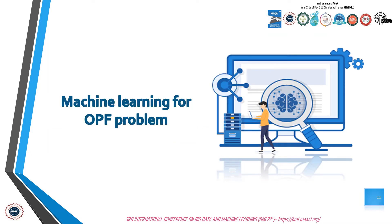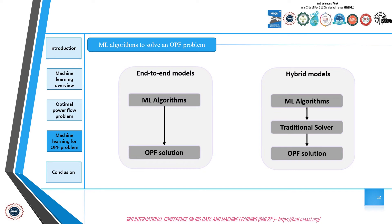In this part, we show the categories of machine learning algorithms used to solve the optimal power flow problem. We can summarize these into two groups: the end-to-end framework and the hybrid framework. The first group uses only the machine learning method to generate the solution directly from the input instance. The second group exploits machine learning algorithms together with a traditional optimization solver.